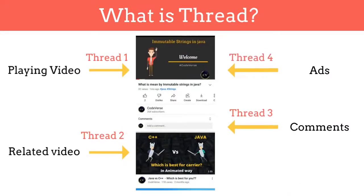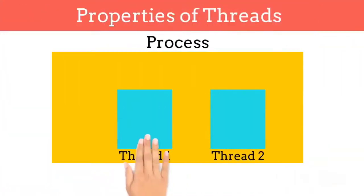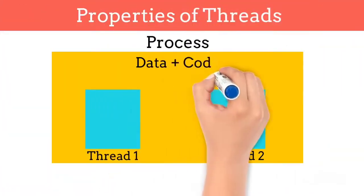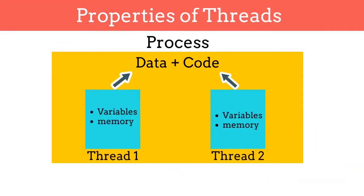Now let's understand some properties of a thread. One process can have multiple threads. Threads share the code and data of the process, but threads have their own local variables and local memory. Process doesn't directly share data with another process. This makes threads more efficient than a process, and this is the reason why thread is called as lightweight process.